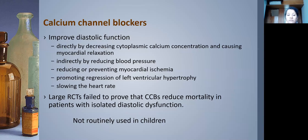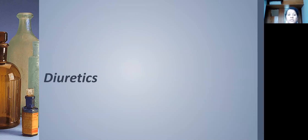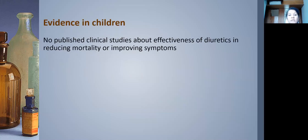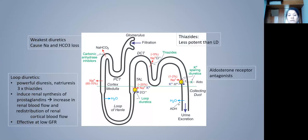Diuretics are the next major drug class, widely used for symptomatic relief from fluid overload. They are used for symptomatic relief only — Class 1 recommendation, but Level C evidence. There is absolutely no survival benefit. In children, there are no published clinical studies about effectiveness in reducing mortality, though we know they improve symptoms.